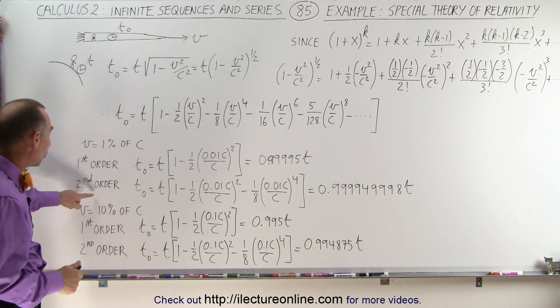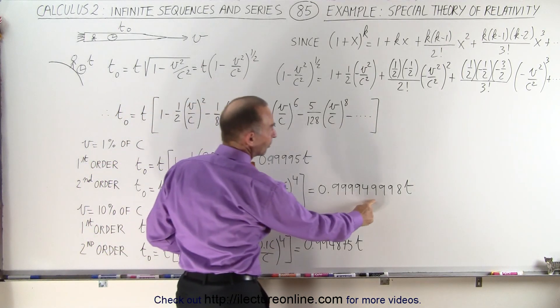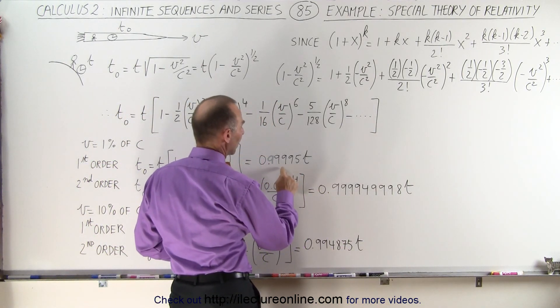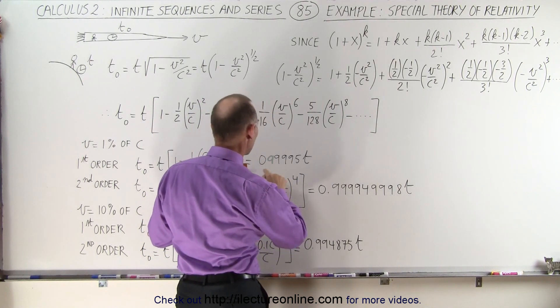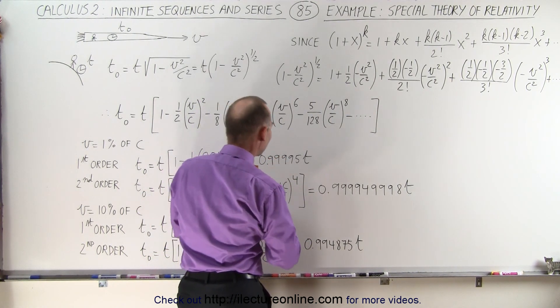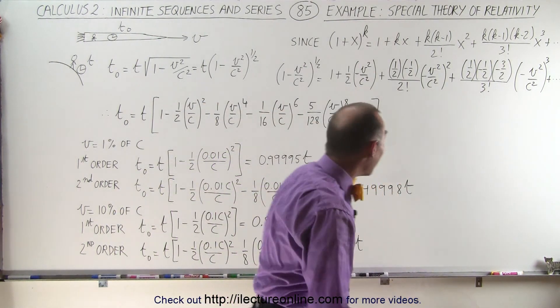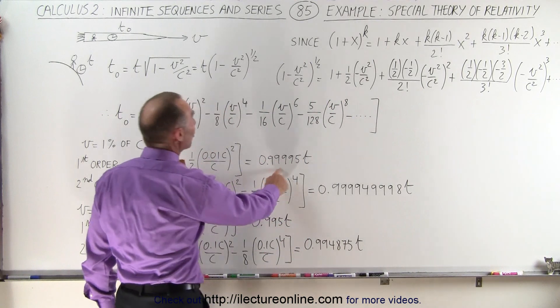If we go one additional order, we do one additional term, notice the difference is extremely slight. Instead of having 0.999, and it looks like I'm missing a number of nines. This should be one more nine like that. Let me check to make sure, I was missing a nine. So it's four nines and a five.